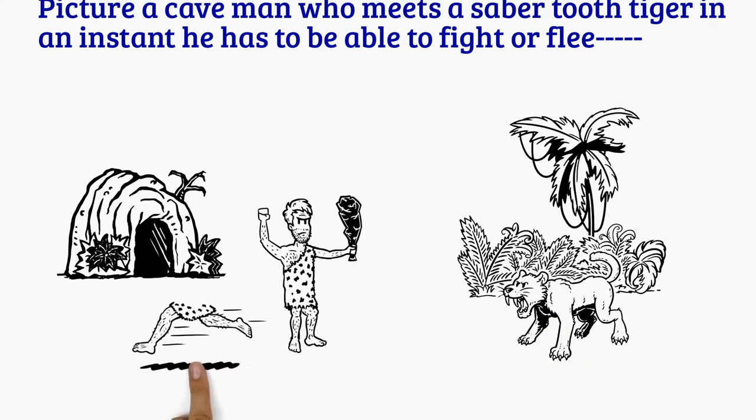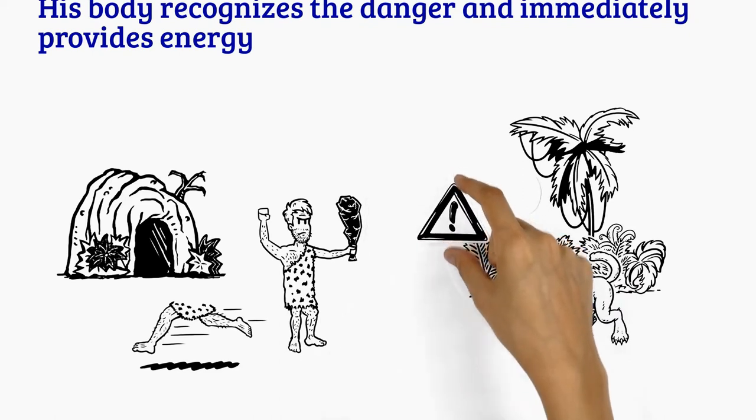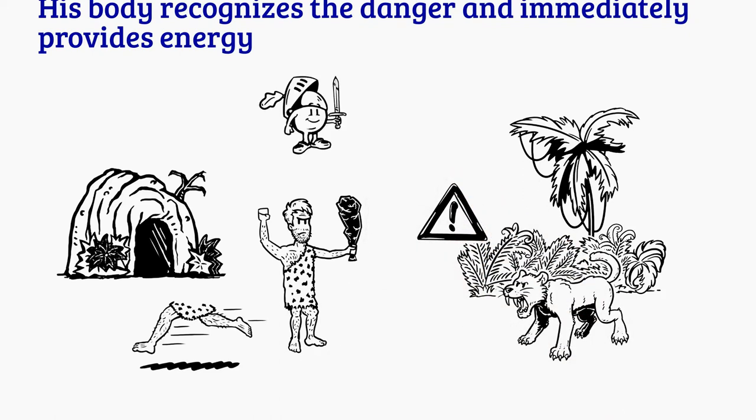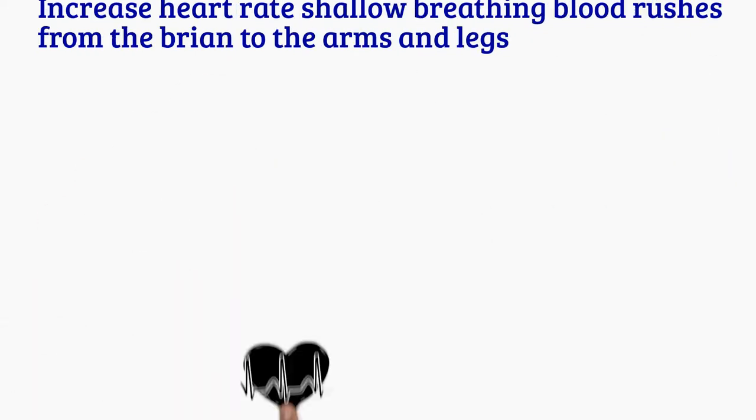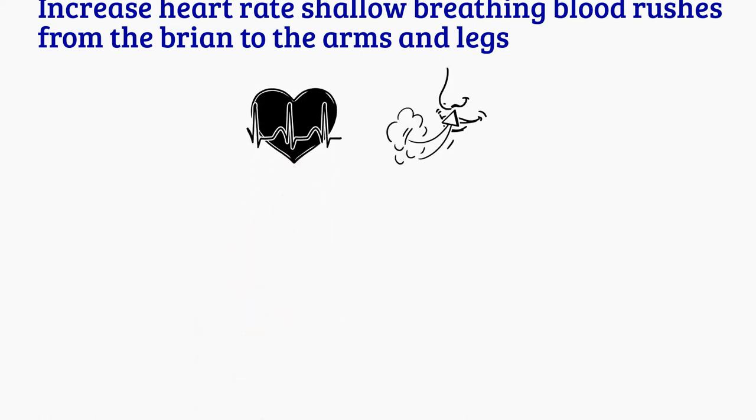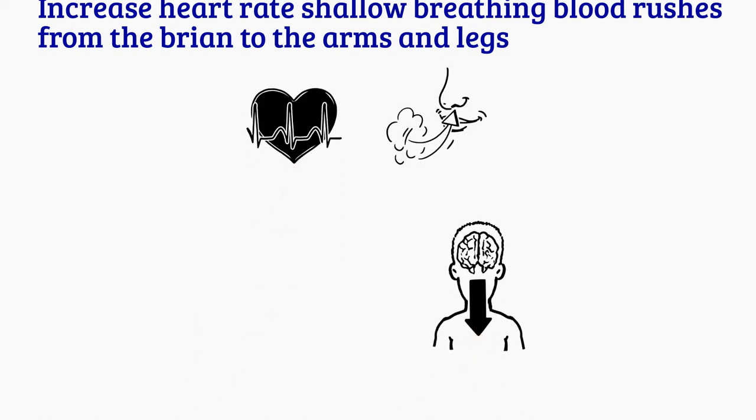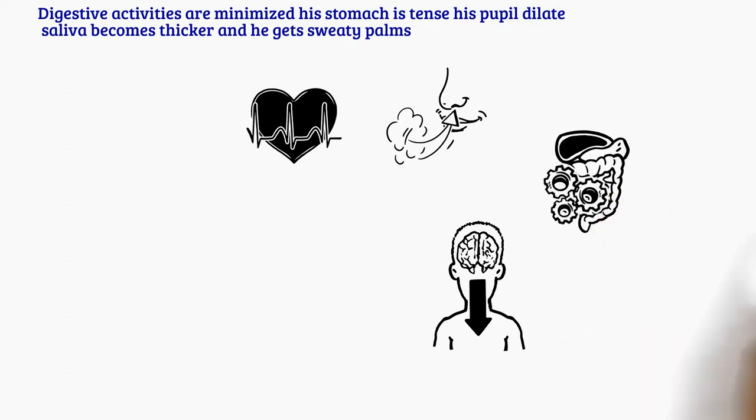His body recognizes the danger and immediately provides energy: increased heart rate, shallow breathing, blood rushes from the brain to the arms and legs. Digestive activities are minimized, his stomach is tense, his pupils dilate.